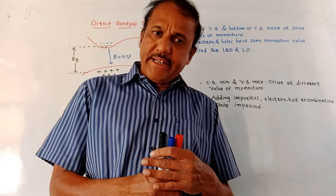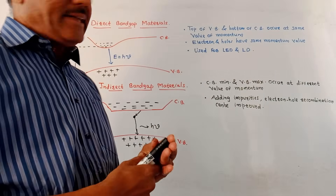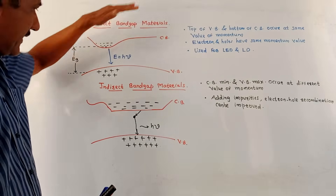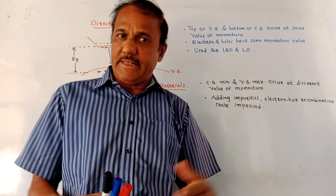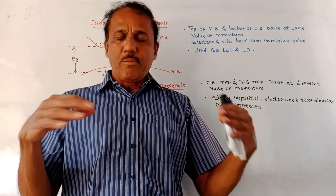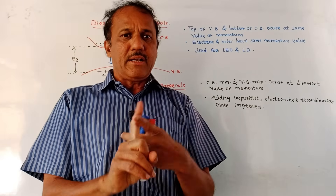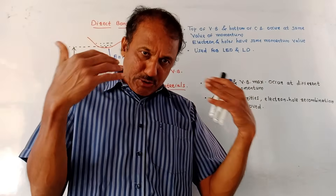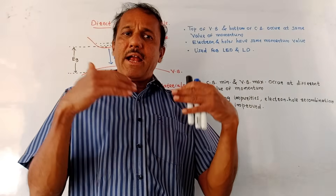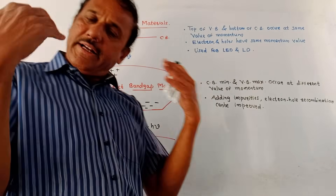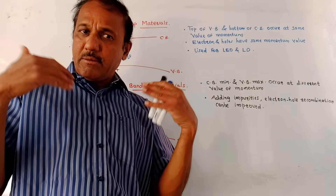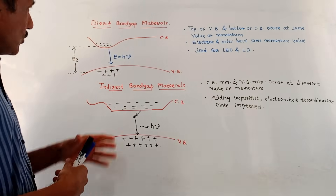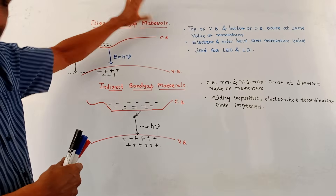There are two major categories of semiconductor material: direct bandgap semiconductor materials and indirect bandgap semiconductor materials. From the exam point of view, you may expect a question like: distinguish between direct and indirect bandgap semiconductor materials, or explain the direct bandgap and indirect bandgap semiconductor materials used for optical sources. We will now discuss direct bandgap semiconducting material first.